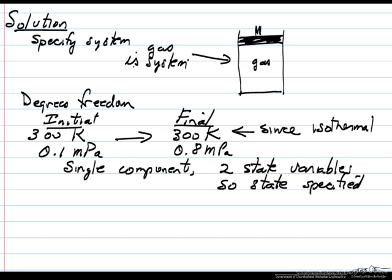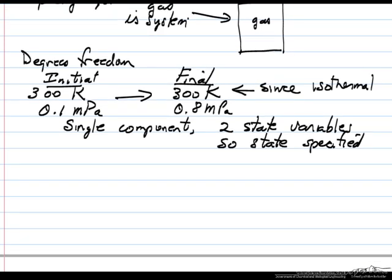Next we look at the degrees of freedom. Initially we're at 300 Kelvin, 0.1 megapascals. The final condition, since it's isothermal, 300 Kelvin and 0.8 megapascals. Since it's a single component system, the phase rule says we only need two state variables to completely specify the system, so both states are specified.